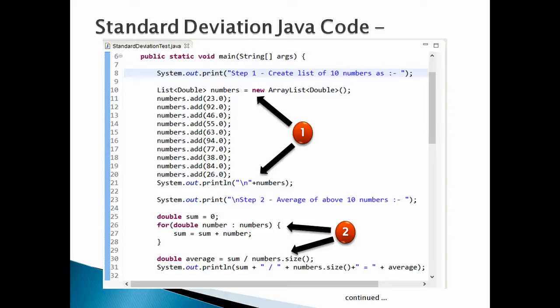Let's take few numbers say 23, 92, 46, 55, 63, 94, 77, 38, 84, 26, whose standard deviation is to be calculated. Add these 10 numbers to the list of numbers. Print list of numbers on the Java console by System.out.println. Moving ahead.